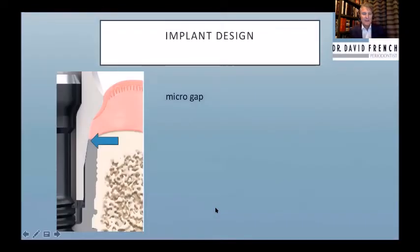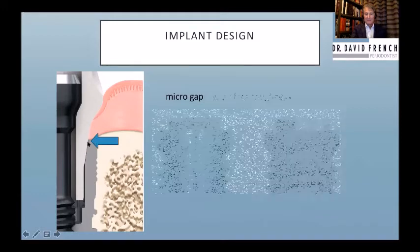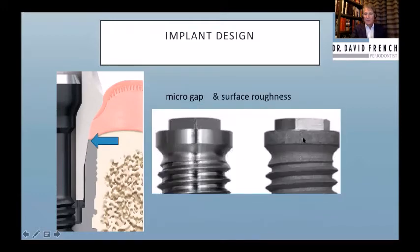Let's focus on implant design. There's something called a micro-gap — that is the implant itself and the abutment that connects either into it or on top of it. This is a platform design, so it's stepped in, and a butt joint design would be directly flush, but no matter what there's a space there. We'll also talk about roughness: a machined implant versus a roughened implant.